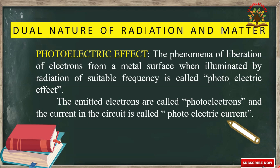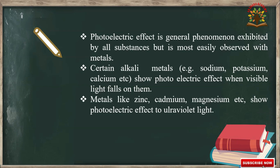The current in the circuit is called the photoelectric current. When light of a suitable frequency falls on a metal surface, the photoelectric effect is exhibited by all substances, but is mostly observed with metals.